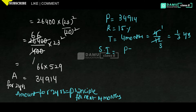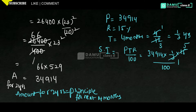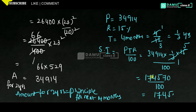Simple interest = PTR/100. P = 34,914, T = 1/3, R = 15. So SI = 34,914 × (1/3) × (15/100) = 174,570 / 100 = 1745.70 rupees. This is the simple interest for the 4-month period.